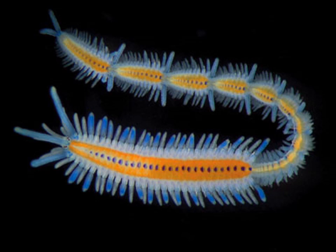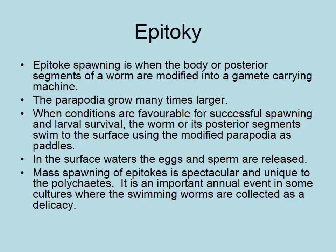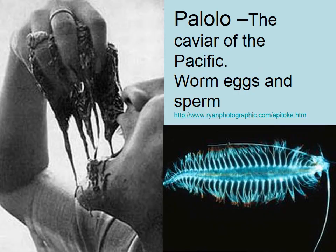Here's another picture of epitokes growing. And here is an epitoke that's modified for swimming — you can see the paddle-like parapodia and setae that are very good for swimming. This is essentially a big egg or sperm delivery system, and these are sometimes netted and eaten.